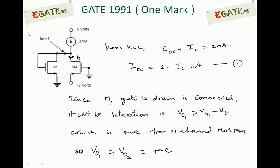Looking at the given diagram, for M1 the gate and drain are shorted together, meaning VG = VD — the gate voltage equals the drain voltage for M1. For any MOSFET, if gate and drain are shorted, it will definitely be in the saturation region, since the condition VD ≥ VG − VT is always satisfied when gate and drain are shorted. So M1 is definitely in saturation.